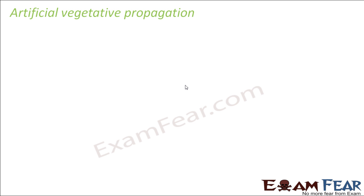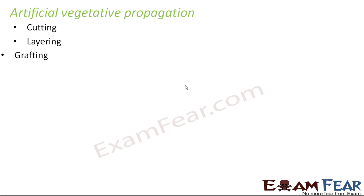But when we talk about artificial vegetative propagation, here we have certain methods like cutting, layering, and grafting — and with these methods we have our own control. So if we want certain characteristics in a new plant, we can do that.